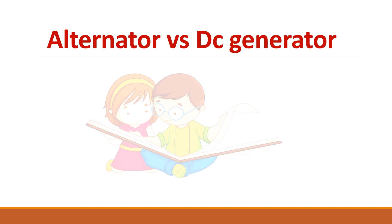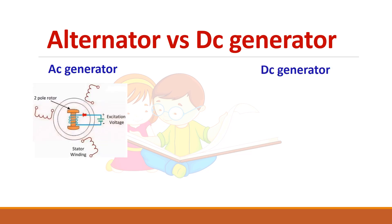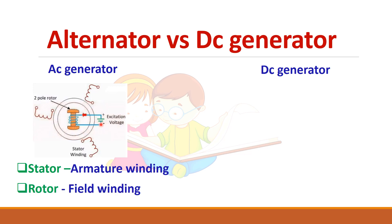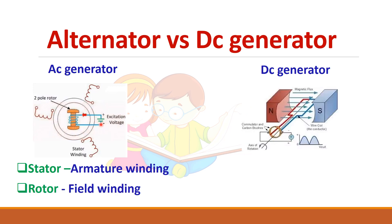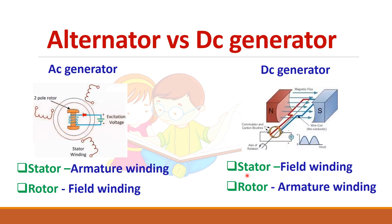Now we will see the difference between an alternator (AC generator) and a DC generator. In an AC generator, there are three-phase windings on its stator and a field winding on its rotor. In a DC generator it is just the opposite — in the stator we have the field winding, so the field poles are stationary, and the armature winding rotates in the magnetic field. So in a DC generator, the stator has the field winding and the rotor has the armature winding.